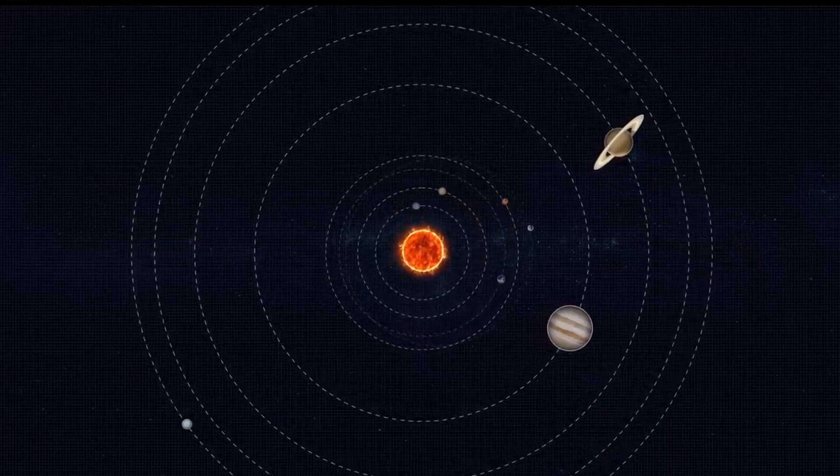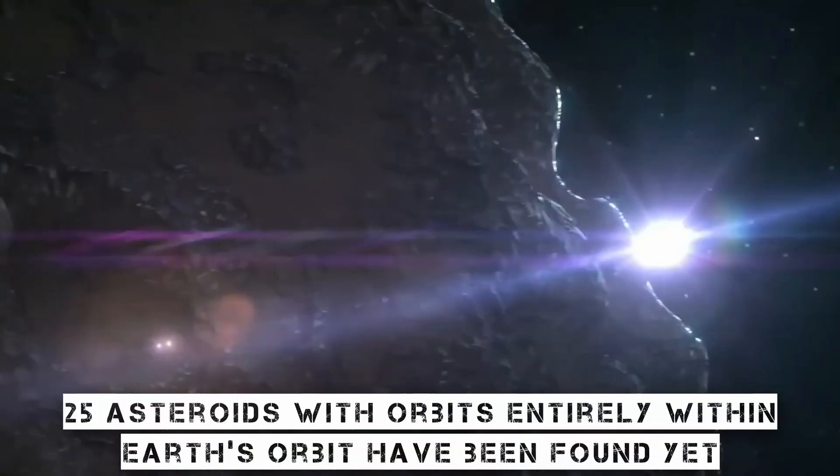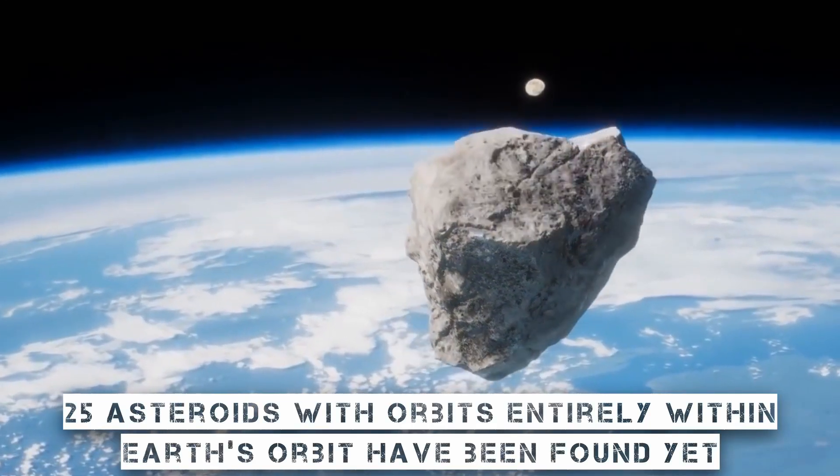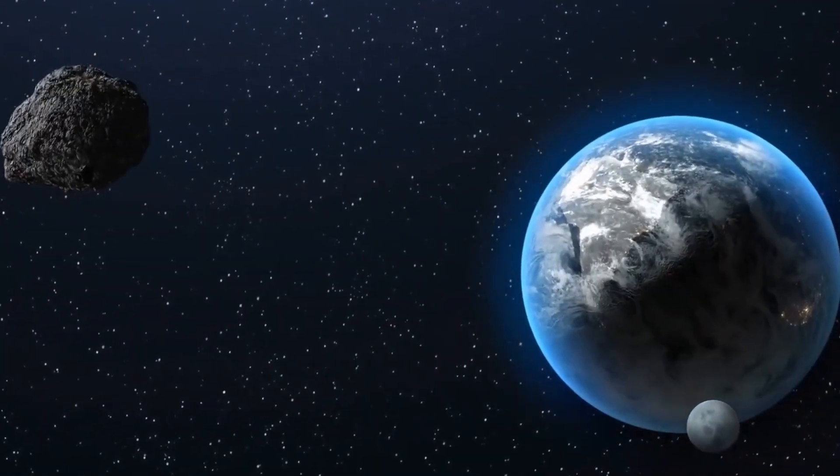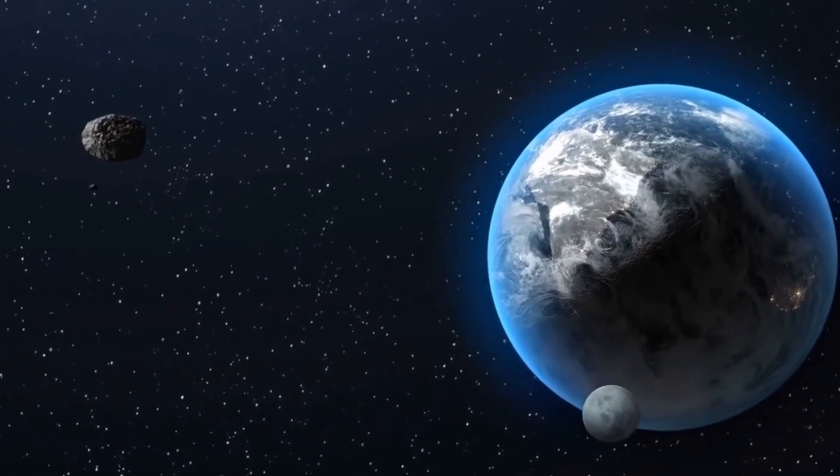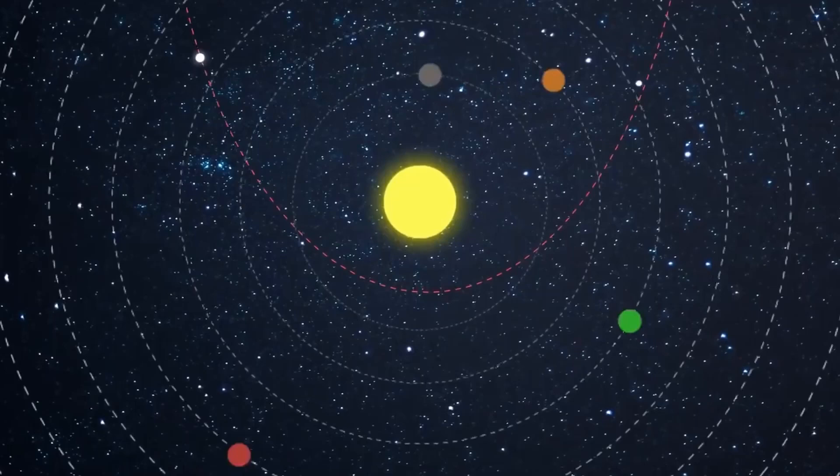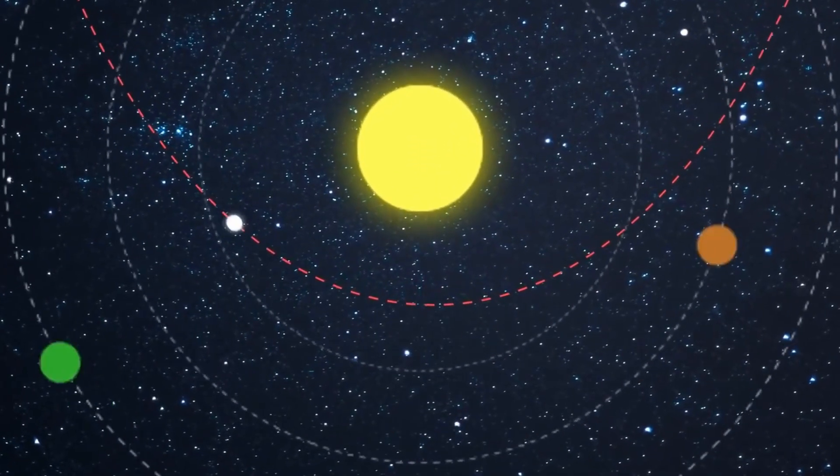Because it is difficult to observe near the sun's glare, only around 25 asteroids with orbits entirely within Earth's orbit have been found yet. These huge asteroids most likely have orbits that keep them mostly inside the orbits of Earth and Venus, and there are probably only a few NEAs of these proportions left to detect.